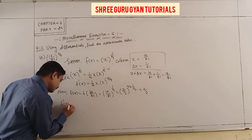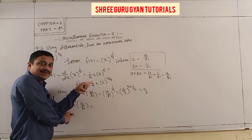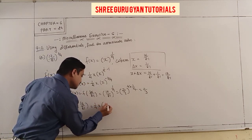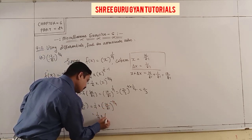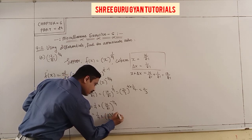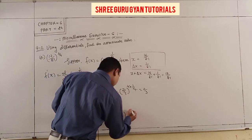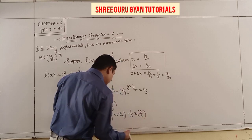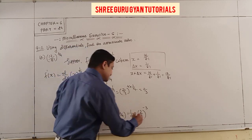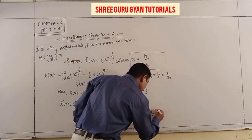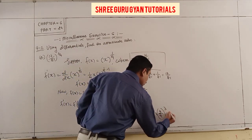Now f'(16/81) = (1/4)·(16/81)^(-3/4) = (1/4)·(2/3)^(-3) = (1/4)·(3/2)^3. That gives (1/4)·(27/8) = 27/32.